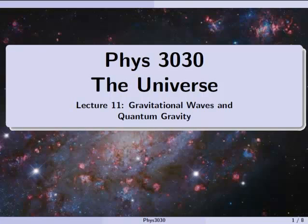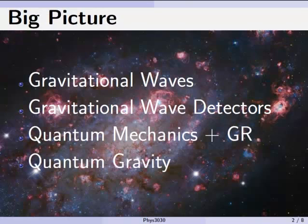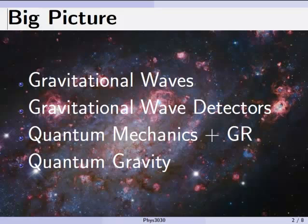Alright, Physics 3030, the Universe. This is lecture 11, and today we're going to talk about gravitational waves, and then we're going to talk about quantum gravity. We'll talk about gravitational wave detectors that we use currently to look for gravitational waves, and we're going to start talking about mixing quantum mechanics and general relativity. I'll show you an example called Hawking radiation, and then we'll talk about the quest for quantum gravity.